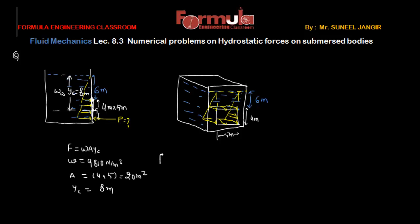So the force F equals 9810 × 20 × 8 = 1,569,600 N (approximately 1569.6 kN). This is the hydrostatic force exerted by the fluid on the gate. Now we need to find the point of action of this force.